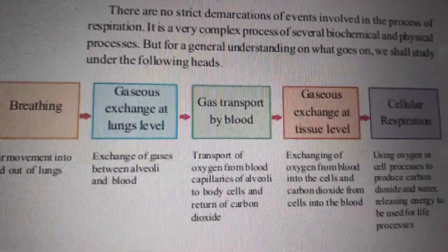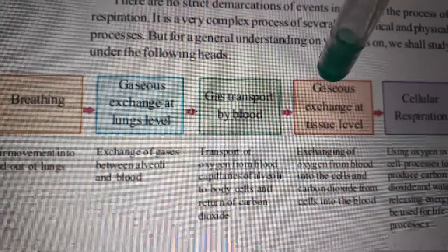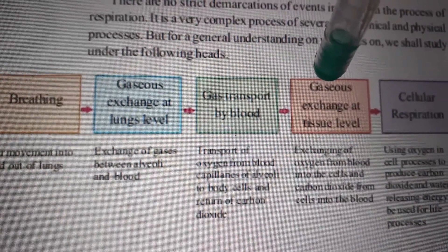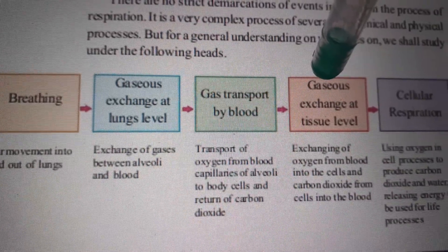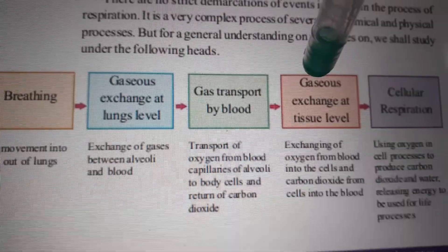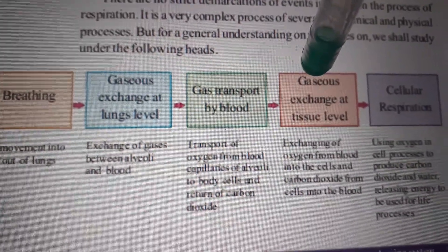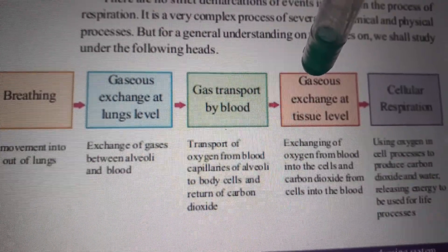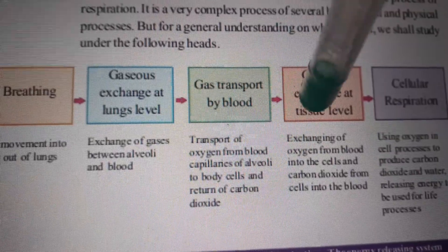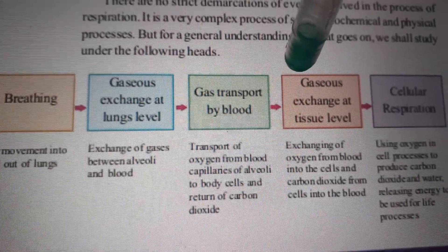The third step is gaseous exchange at tissue level. The blood from lungs, because of exchange of gases, carries the oxygen. The oxygenated blood is carried to the tissues, so that the tissues which carry carbon dioxide give it to the blood, and the blood which carries oxygen gives it to the tissues.